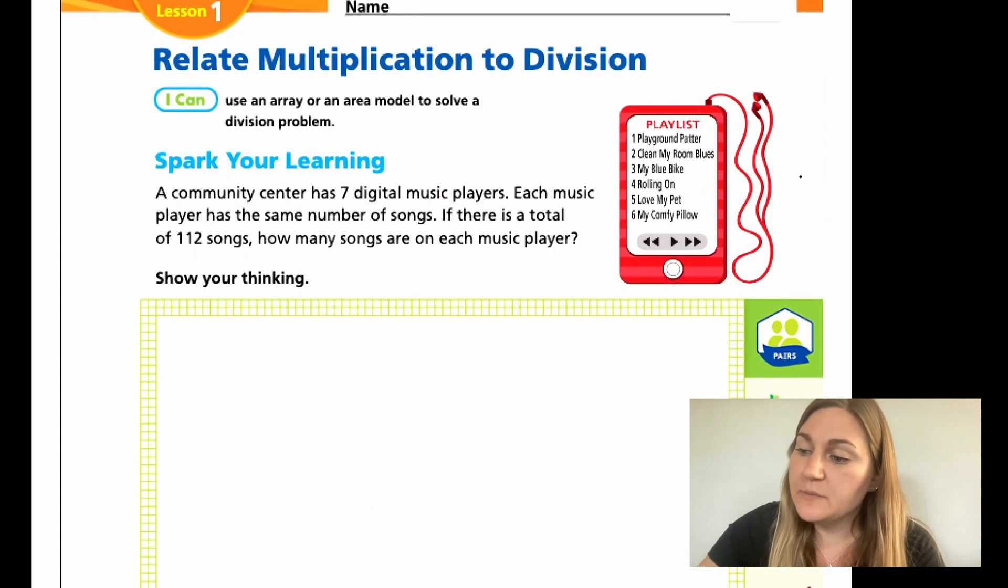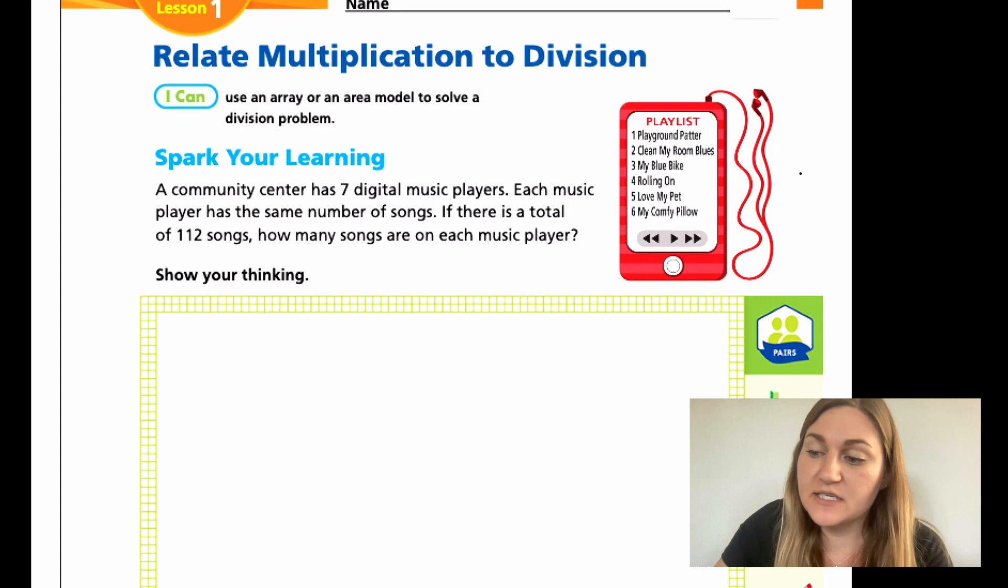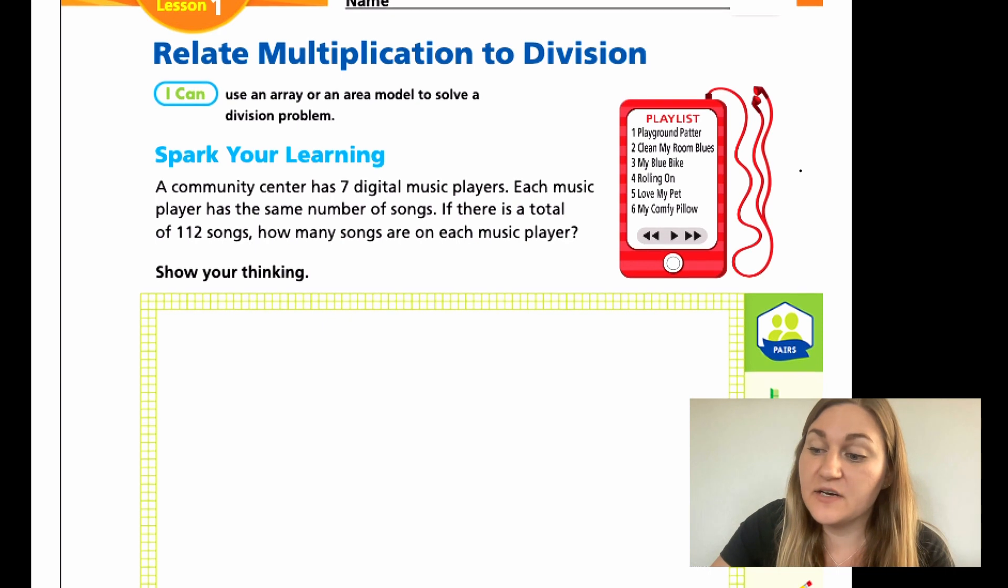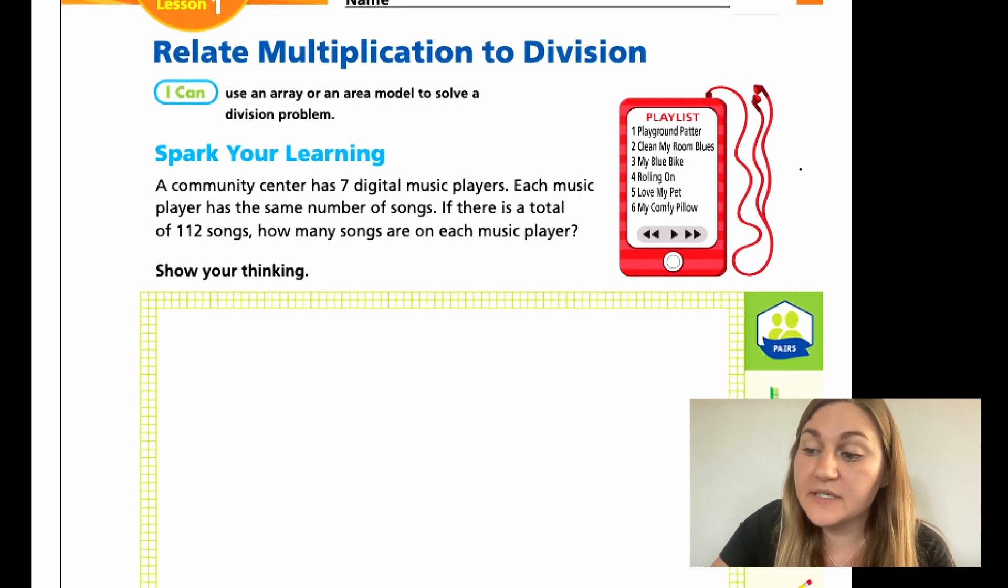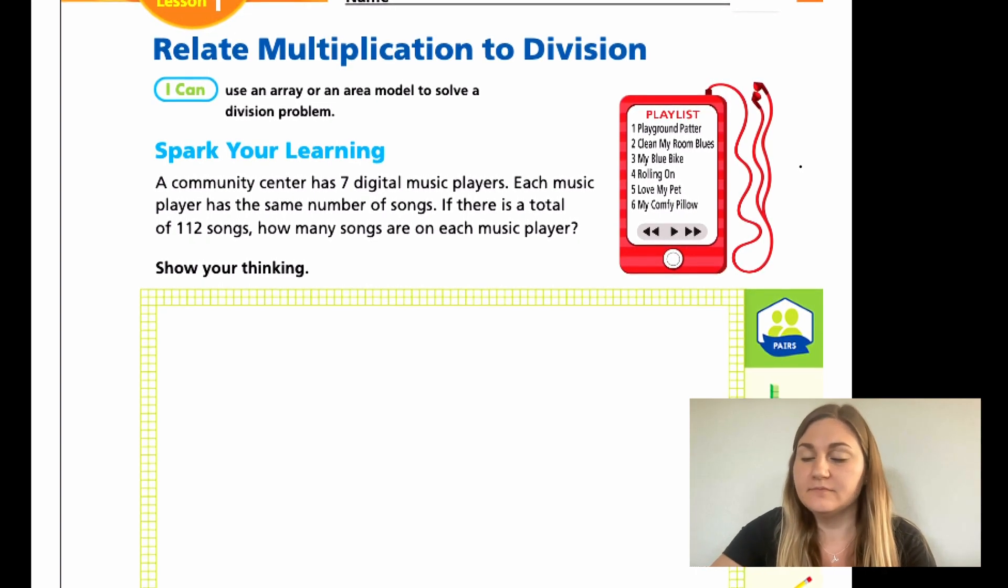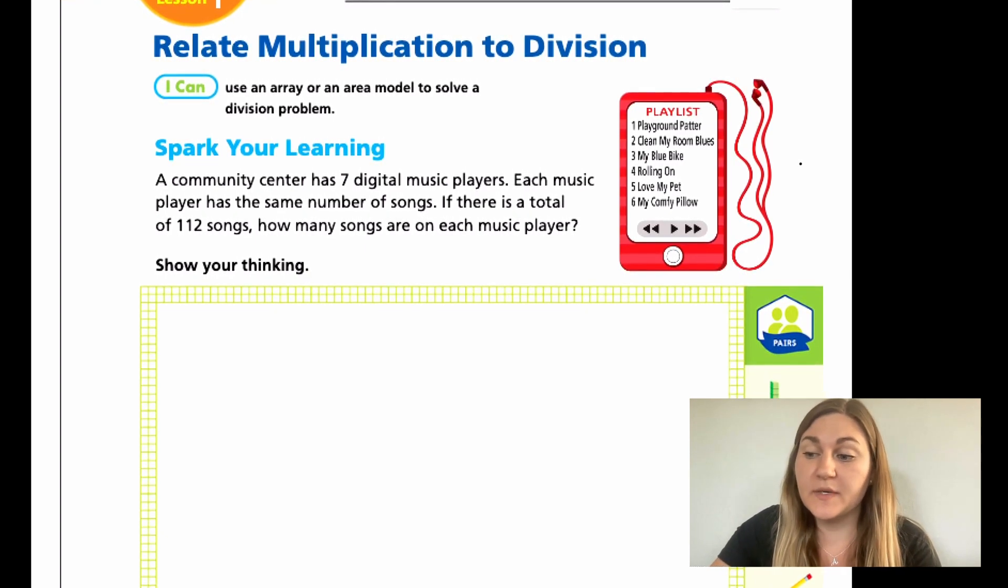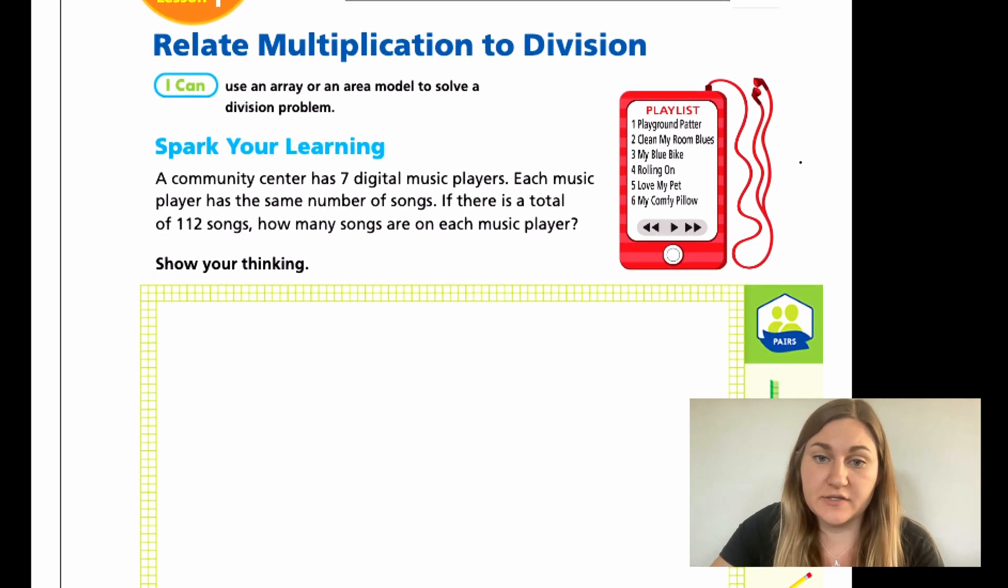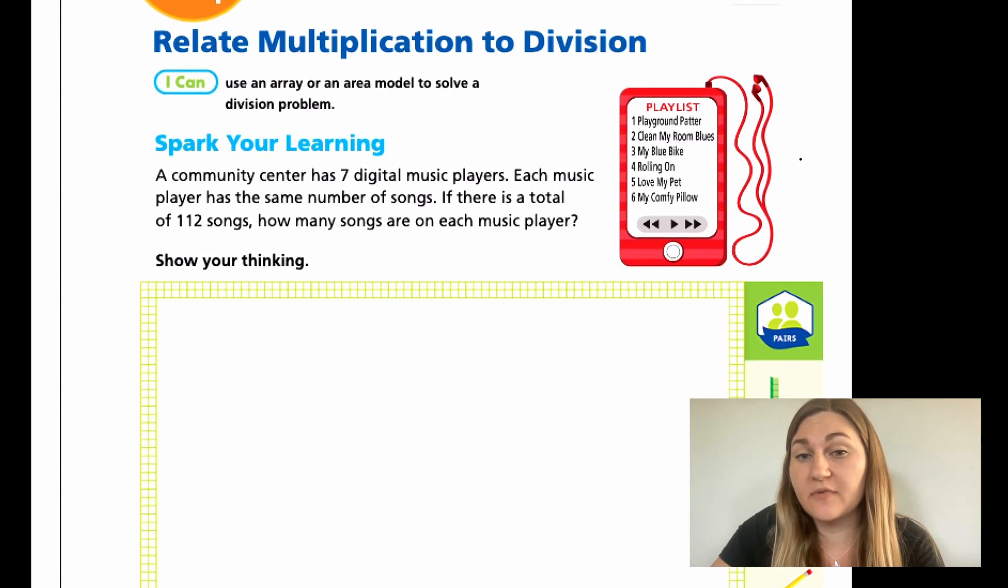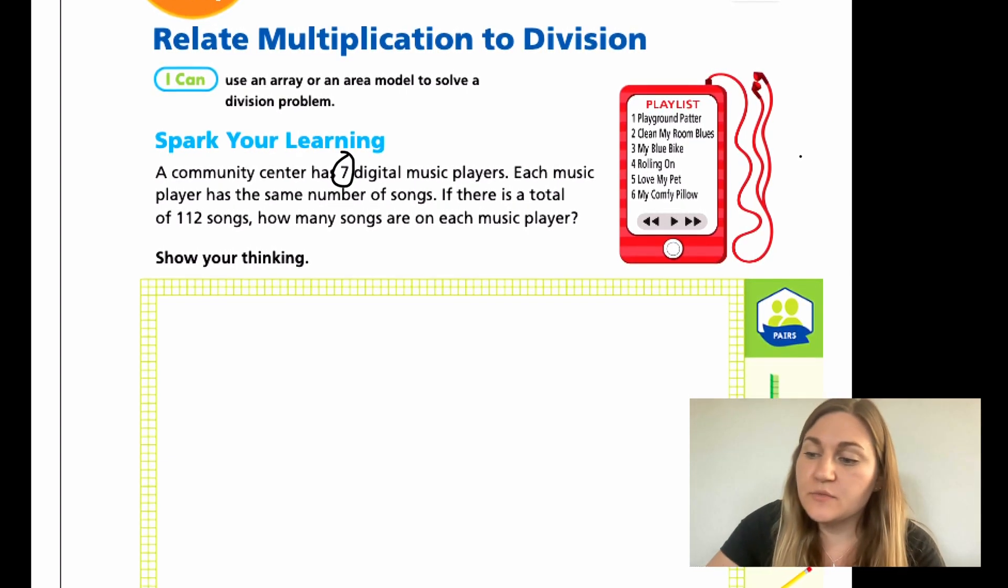Okay, so now we're going to be jumping into page 33, Spark Your Learning. So a community center has seven digital music players. Each music player has the same number of songs. If there is a total of 112 songs, how many songs are in each music player? All right, so the first time reading through, we're talking about something like an iPod playing music. There's 112 songs between the seven digital music players. Okay, so now we're going to read through it again, picking out the numbers and if there's any wording telling us what type of operation we're going to be doing.